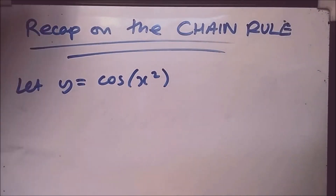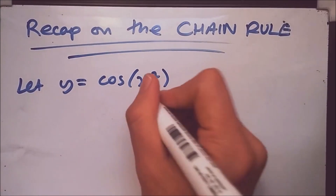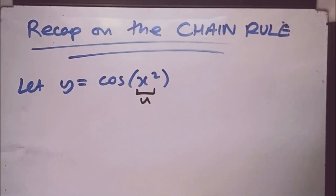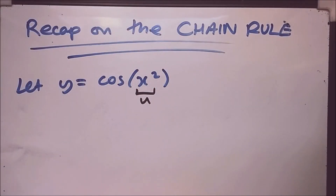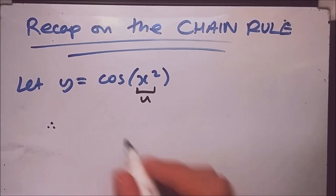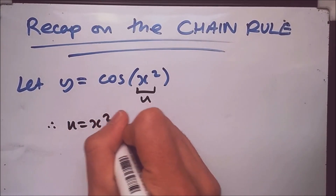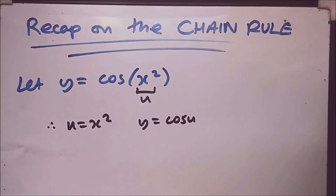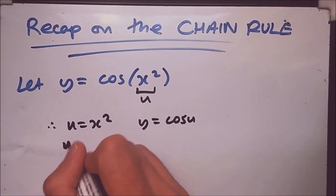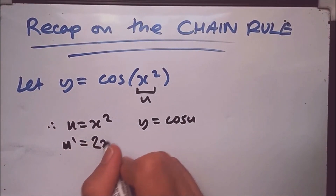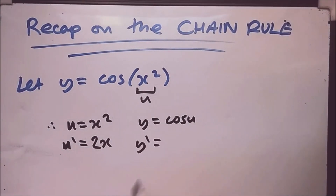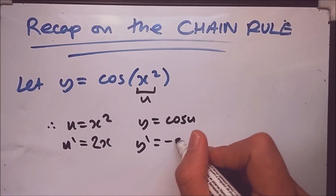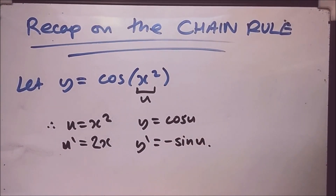For the chain rule example, we have a function within a function — not two different products or quotients. Using the chain rule definition, we let u equal x squared, so y equals cos(u). Taking the first derivative of u gives u prime equals 2x. Taking the derivative of cos(u) with respect to u gives minus sine(u).